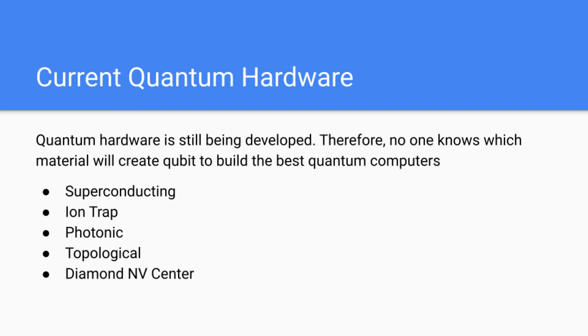Currently, quantum computing is still being developed. Therefore, no one really knows which material will create the best qubit to build the best quantum computers. However, some of the most prominent qubits that are currently being researched are superconducting qubits, ion trap qubits, photonic qubits, topological qubits, and diamond NV center qubits. All of these different qubits have their own merits to them. So where superconducting might be very good at one aspect, they might be lacking in another aspect that maybe the ion trap qubit is very good at.